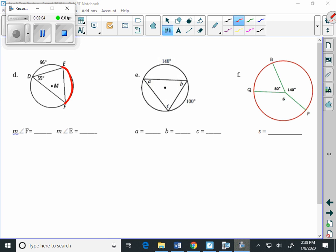Because the measure of the inscribed angle is half the measure of our arc EF. So if we take 55 times 2, we get 110.